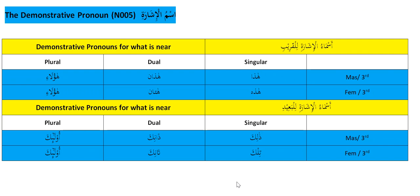In Arabic we have a little bit more detail. Whether the thing you are pointing to is singular, dual, or plural — it varies. Whether it's masculine or feminine — it varies. And also if it's near or far. In English, 'this' is near singular, 'these' is near plural, 'that' is far singular, 'those' is far plural. Arabic has more detail than that.